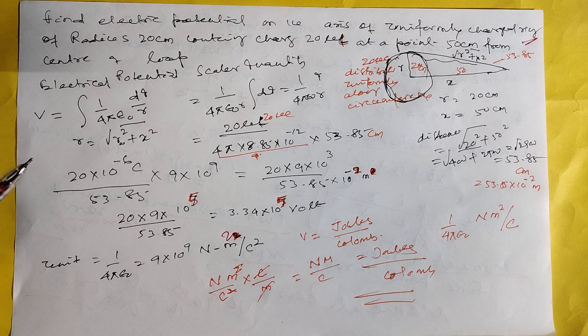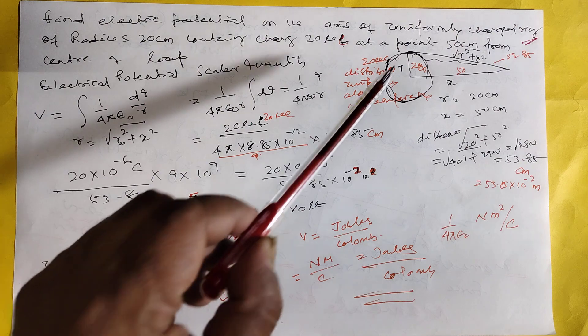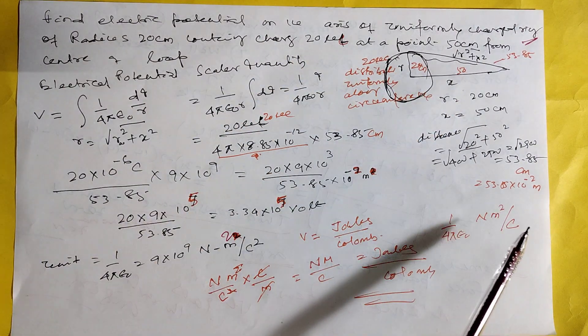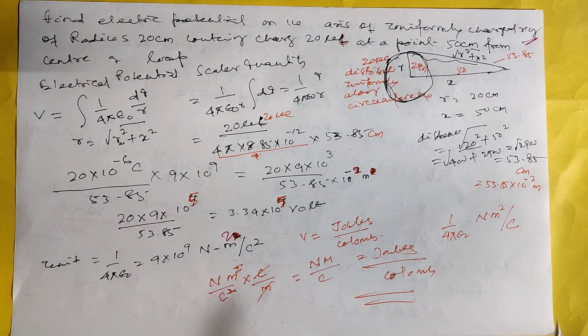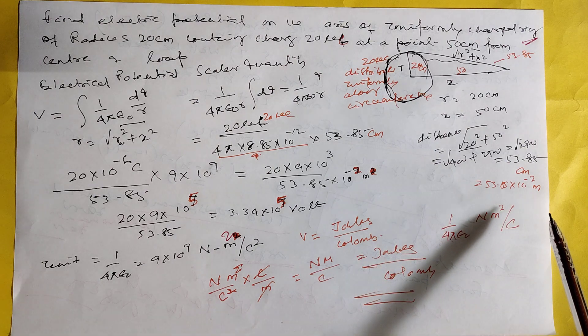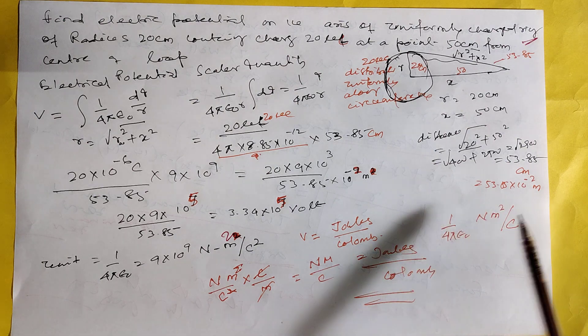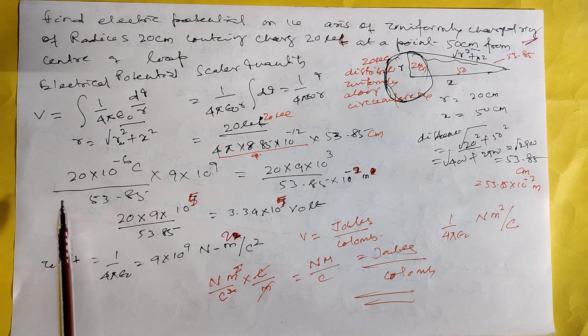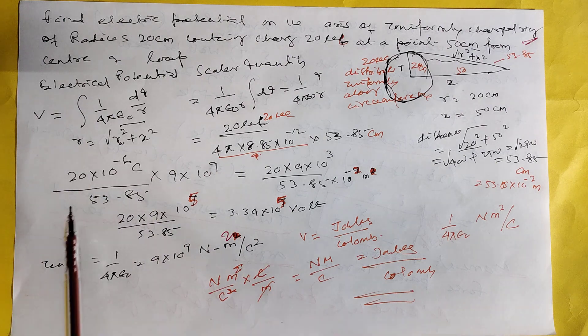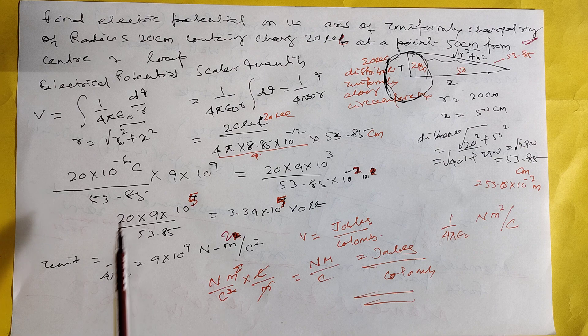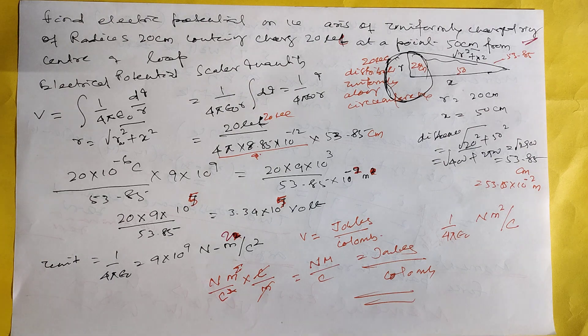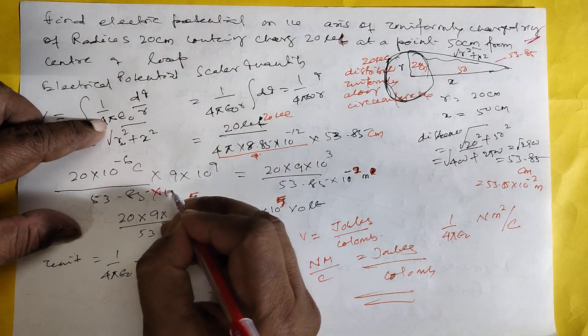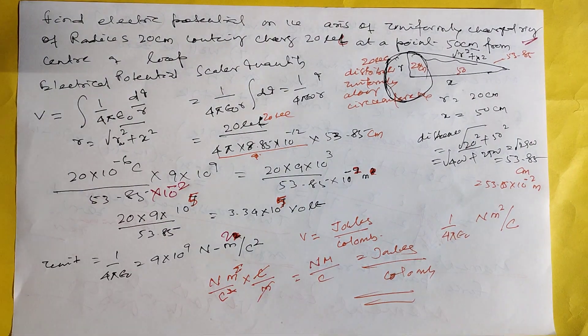So that after integration, here r is there, 20 square plus 50 square is 53.5 centimeter. We have to convert to meter, into 10 to minus 2 meter. Here we have to put everything: 9 into 9 plus 9, 20 into 10 to minus 6 coulomb, 53.85 into 10 to minus 2.